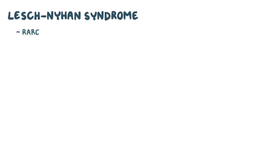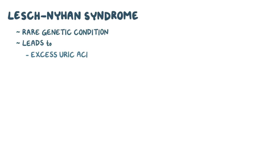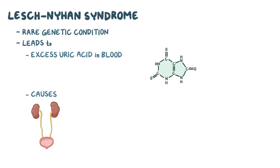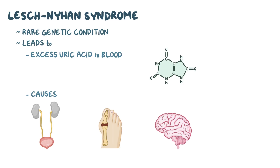Lesch-Nyhan syndrome is a rare genetic condition which leads to excess uric acid in the blood, and it causes kidney, joint, neurological, and behavioral problems.